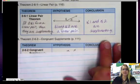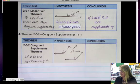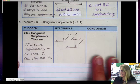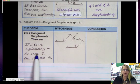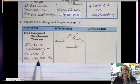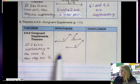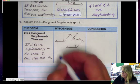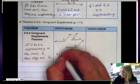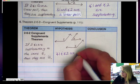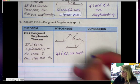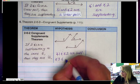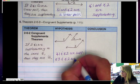Our next theorem is the Congruent Supplements Theorem. And the Congruent Supplements Theorem says that if two angles are supplementary to the same angle, then they are congruent to each other. So here's our example. We can say that our hypothesis is that angle 1 and angle 2 are supplementary. We also are going to be given that angle 3 and angle 2 are supplementary.